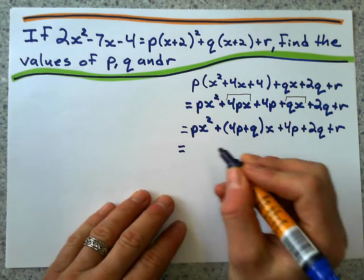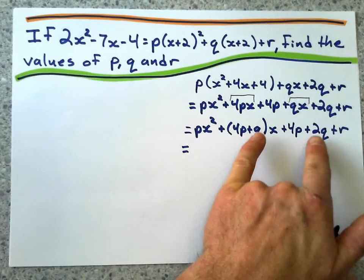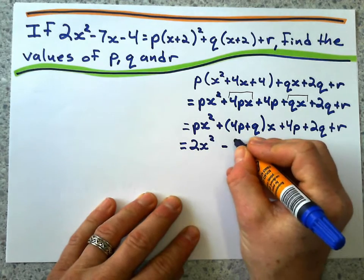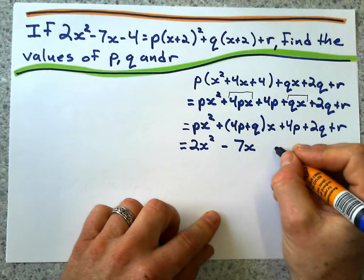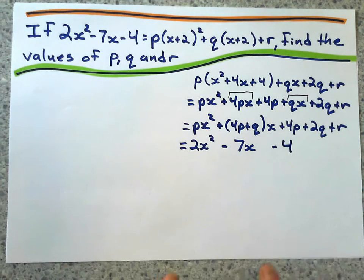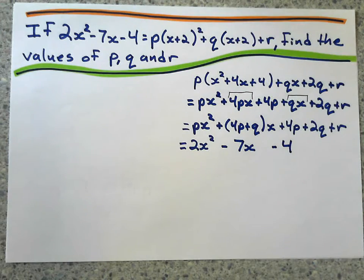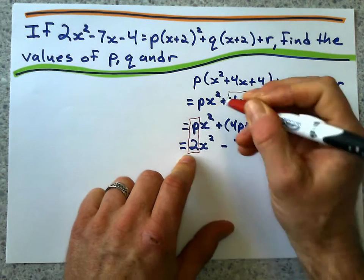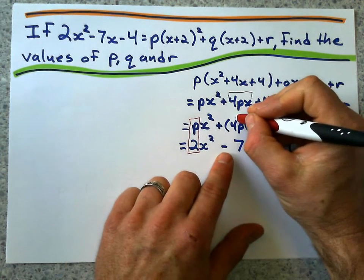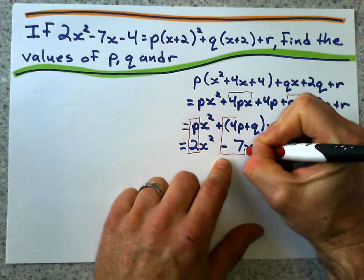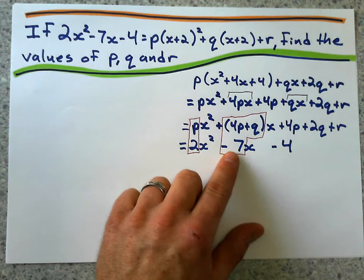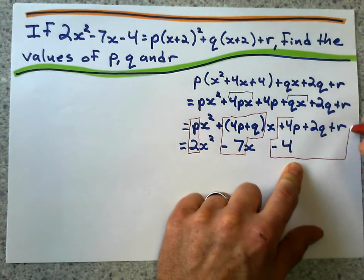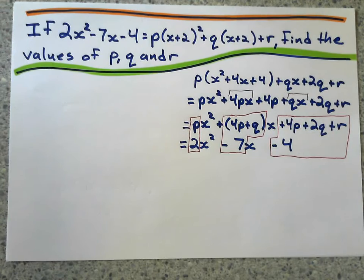Now, here's the interesting part. It says that this expression equals this first one, so that means that this big long thing right here must equal 2x squared minus 7x minus 4. Okay, so these two expressions have to equal each other. Well, what that means is that I'm looking at these coefficients. P has got to be equal to 2, and this coefficient here, 4p plus q, that's going to equal negative 7. And then all of this leftover stuff here is going to have to equal negative 4.